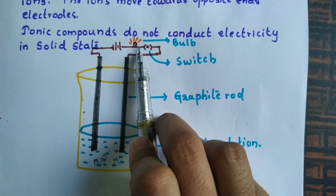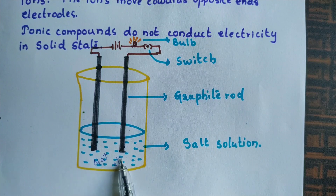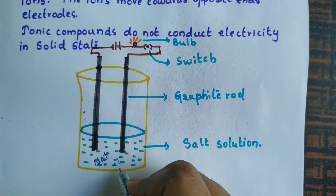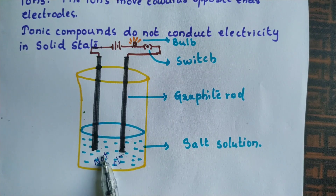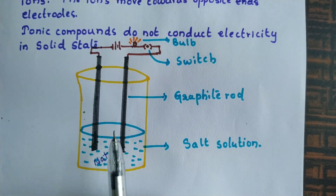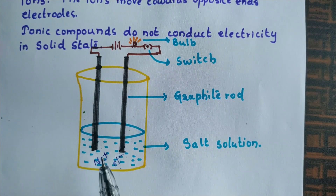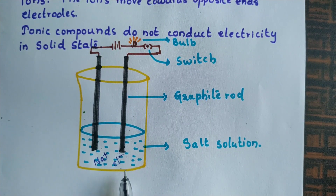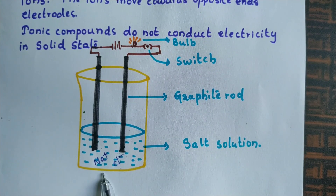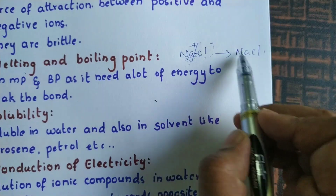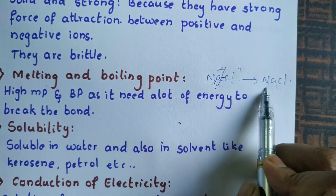Why does this happen? In sodium chloride solution, it splits into Na⁺ and Cl⁻. These ions help carry the electrons from one electrode to the other — passing of electrons creates the electricity, passing it from one electrode to the other. So ionic compounds in aqueous solution are capable of conducting electricity. But in solid state they are not able to conduct electricity because the ions are not free to move. Only free ions are capable of conducting electricity — in solid state sodium chloride is not in ionic form, so it cannot conduct electricity.